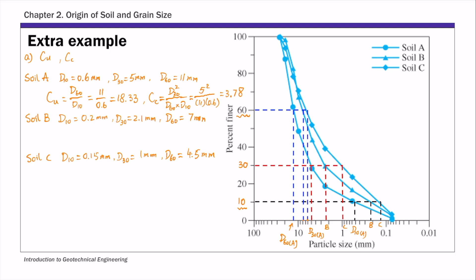Similarly, for soils B and C, use the definitions of Cu and Cc to calculate their values. For soil B, substituting d60 and d10, Cu is 35 and Cc is 3.15. For soil C, Cu is 30 and Cc is 1.48.